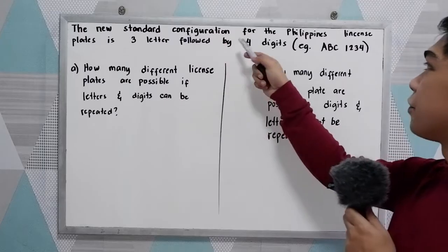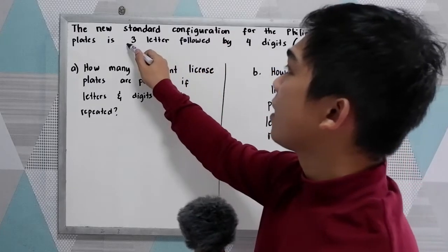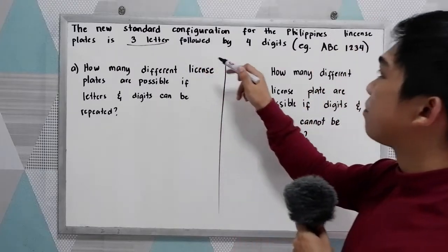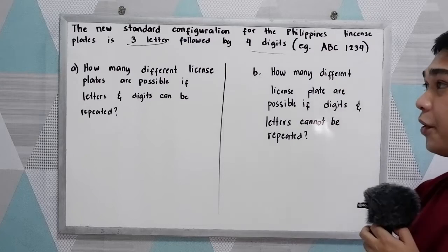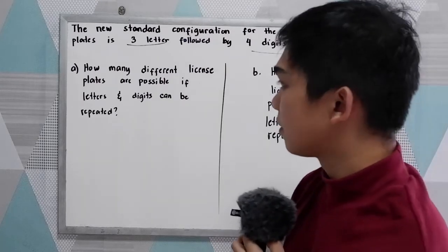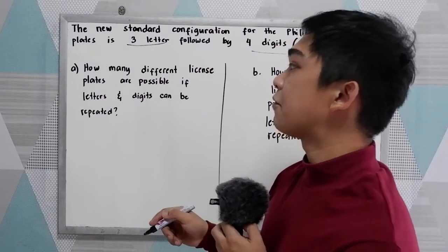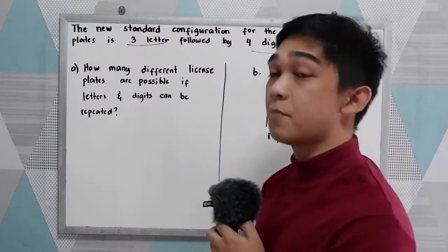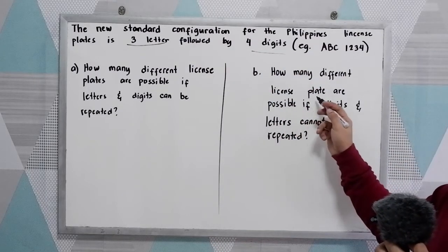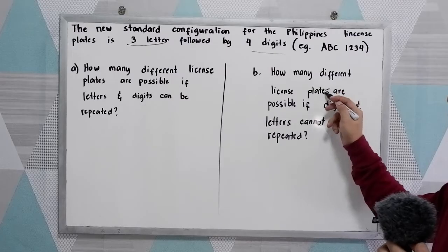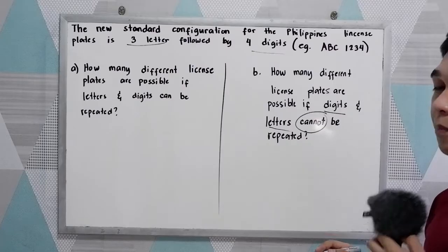The new standard configuration for the Philippines License Plates is 3 letters followed by 4 digits — for example, ABC 1234. Letter A: How many different license plates are possible if letters and digits can be repeated? Letter B: How many different license plates are possible if letters and digits cannot be repeated?